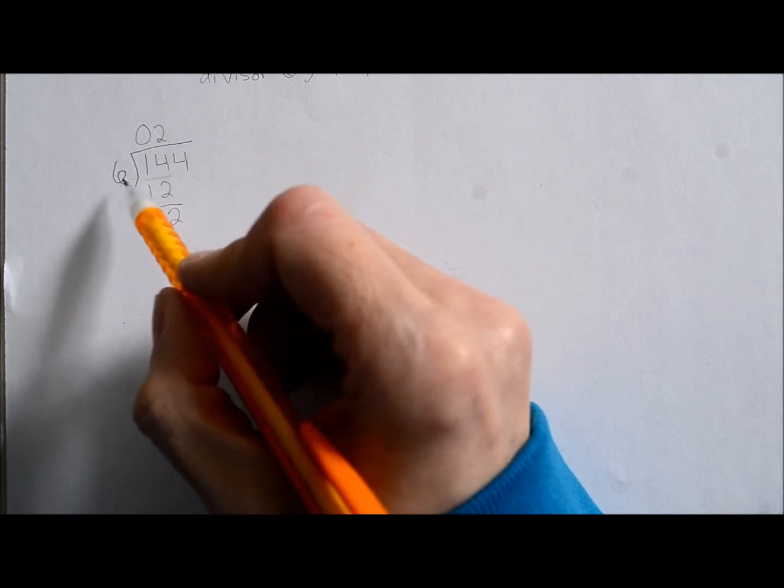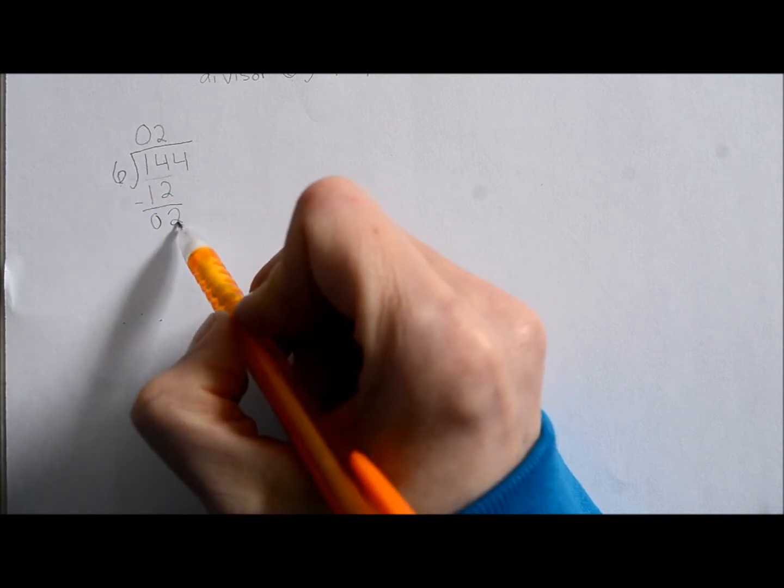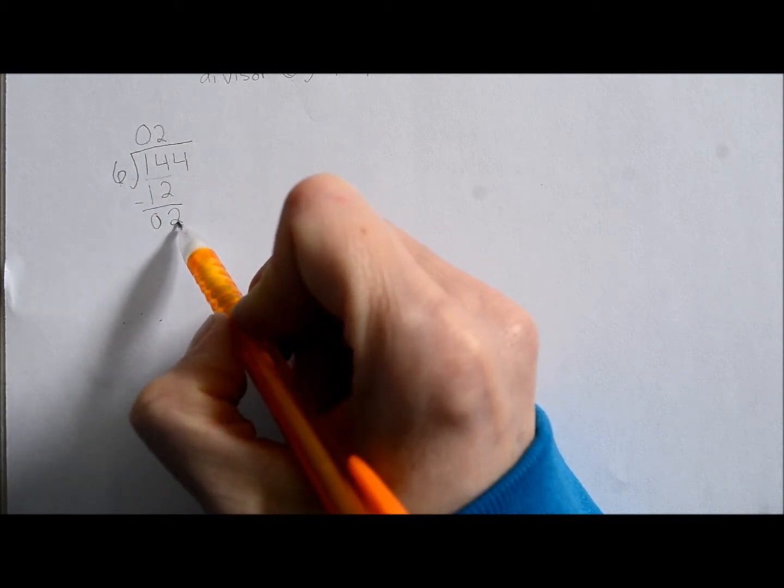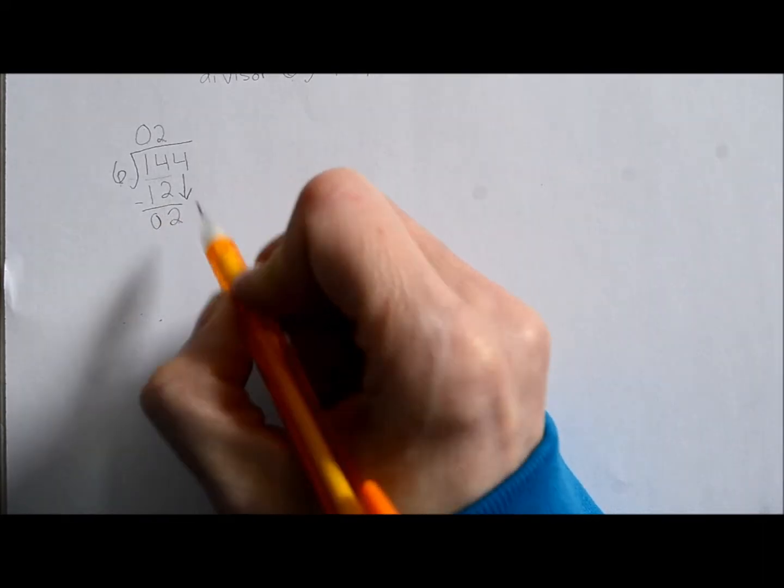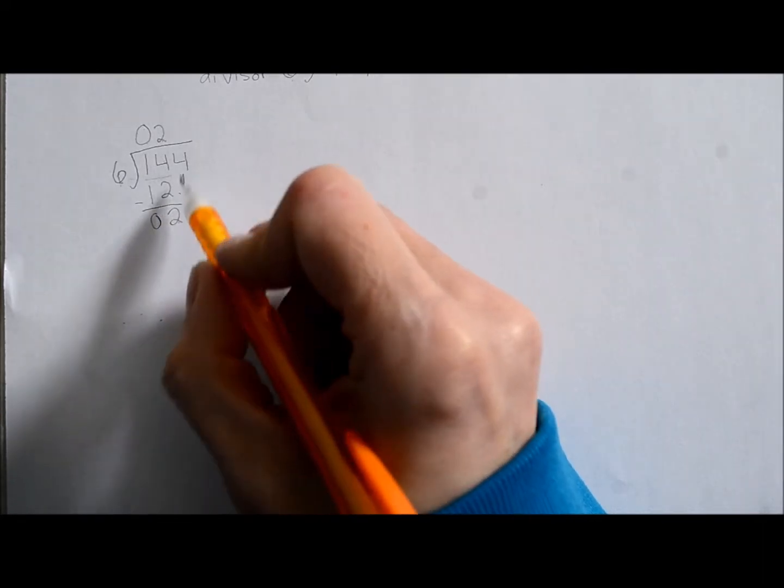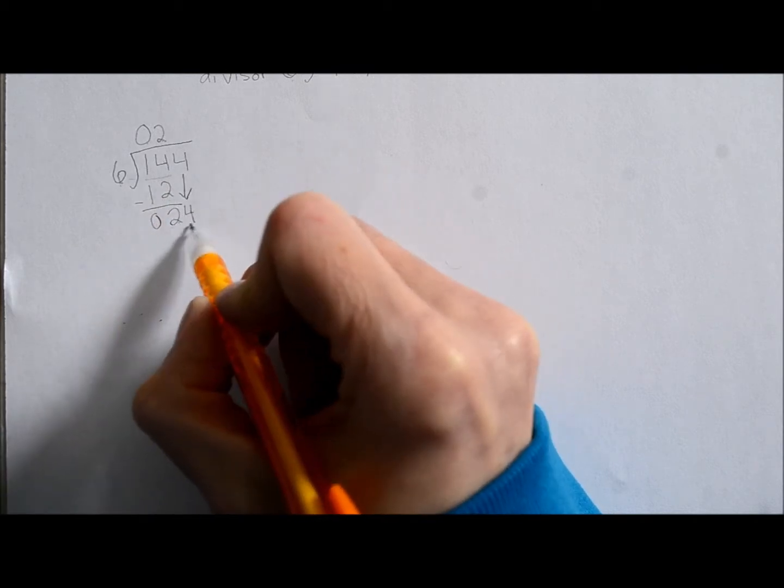So now what we have to do is say, will six go into two? Well, no, it's much too big to go into two. So what we're going to do is bring down the four over here. So we bring this four down and we just draw it right here beside the two. Now we have 24. Oh, that's amazing.